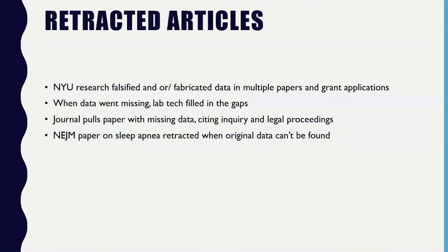There are lots of benefits to data management, but there are also some consequences. I'm going to go through four examples of retracted articles that were retracted specifically because their data was missing or falsified. The first example is a NYU researcher who falsified data in three different papers and seven different grants. They claimed the falsification was because their funder went bankrupt. They had to retract multiple papers, had lost the raw data, and also falsified results by copying Western blot images from unrelated sources, manipulating them to obscure their origin, and relabeling them to represent different experimental results.